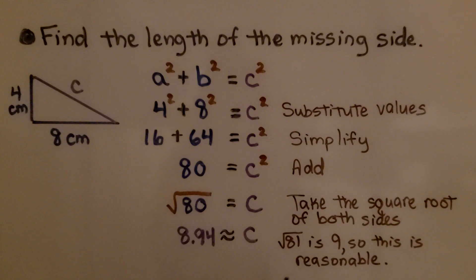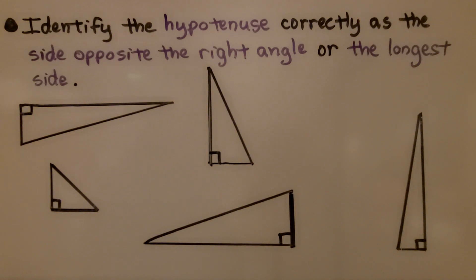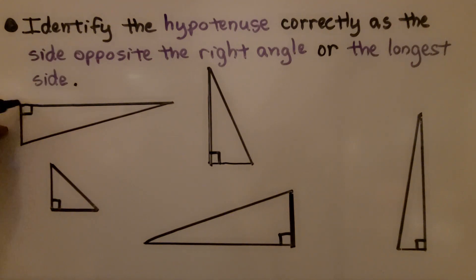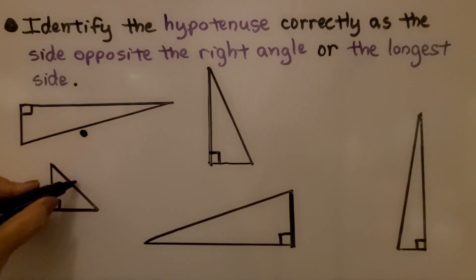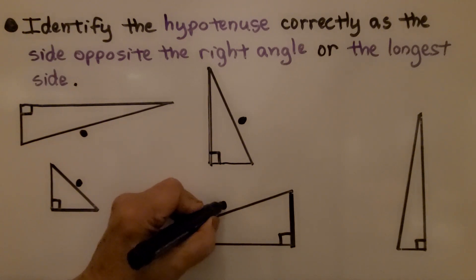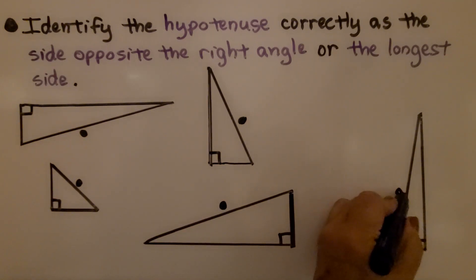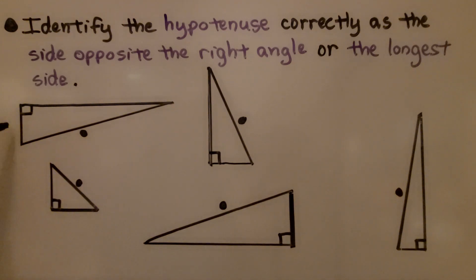Since √81 = 9, we know our answer of about 8.94 is reasonable. It's important to correctly identify the hypotenuse as the side opposite the right angle — or the longest side. Identify the right angle (the square 90-degree angle) and the side opposite it is the hypotenuse. Make sure c is the hypotenuse in your formula; a and b can be either leg, but c must be the side opposite the right angle.